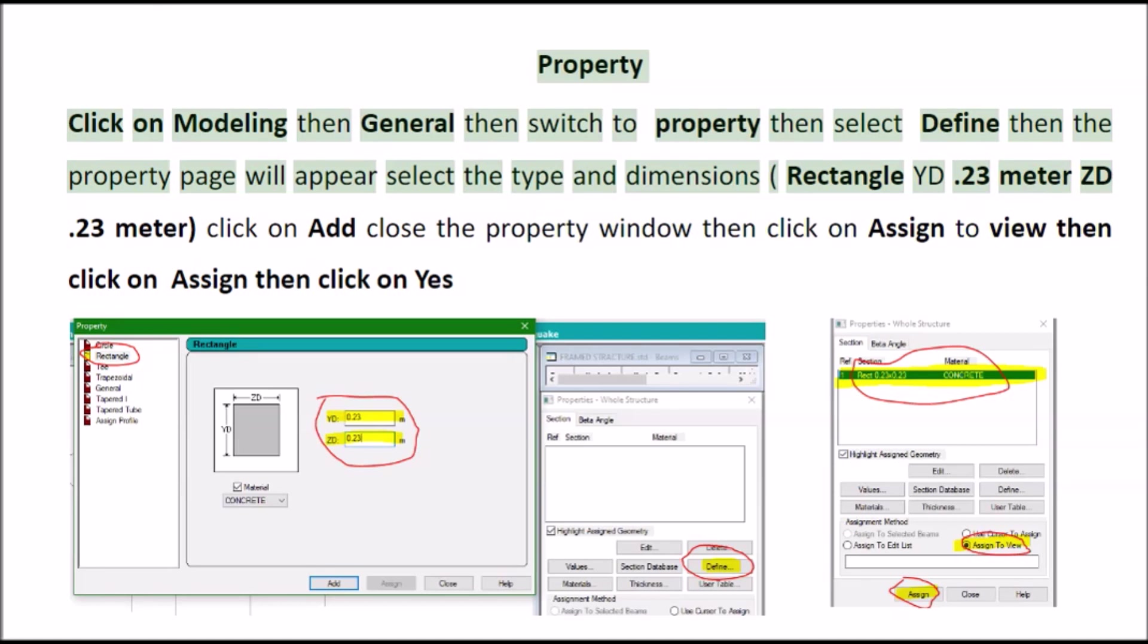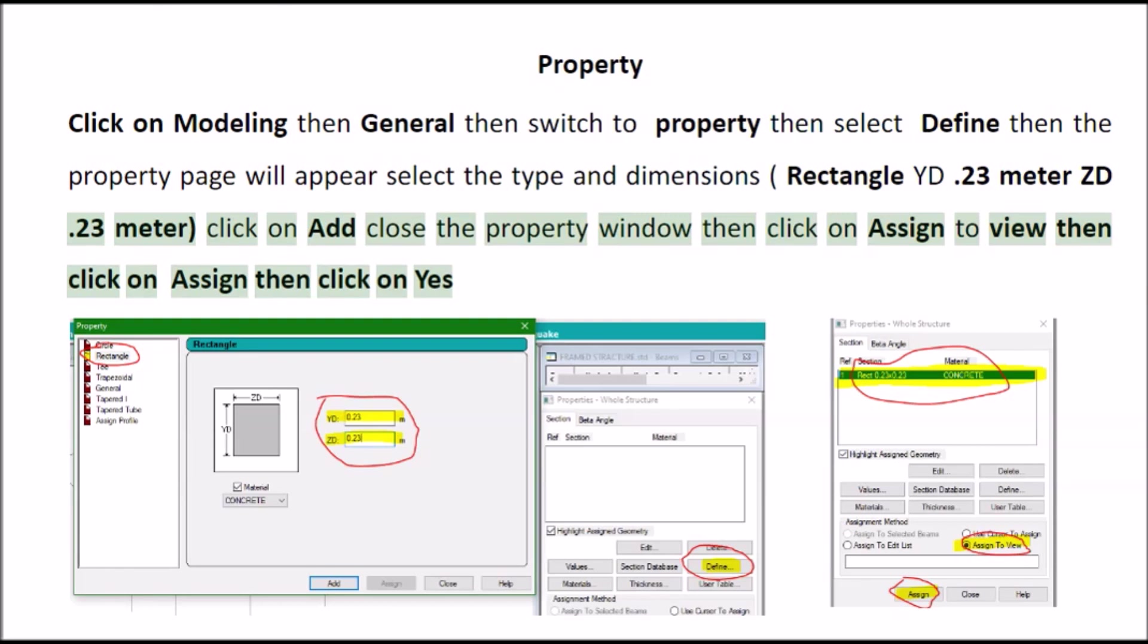Property click on modeling then general then switch to property then select define then the property page will appear select the type and dimensions, rectangle YD 0.23 meter ZD 0.23 meter, click on add close the property window then click on assign to view then click on assign then click on yes.